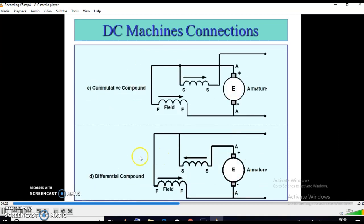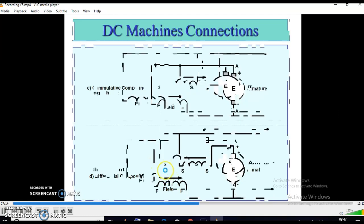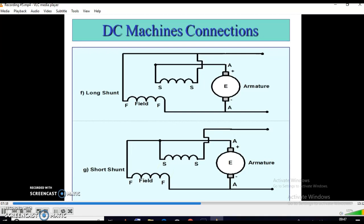Now, the compound excitation. If the machine has both series field flux and shunt field flux that aid each other, that means the resultant flux increases, the machine is called cumulative compound. Again, if the series field and shunt field flux oppose each other, that is called differential compound. These are classified as long shunt and short shunt based on construction.